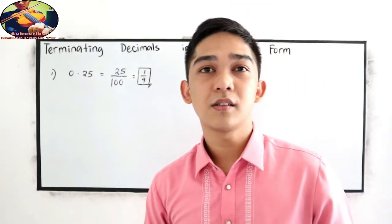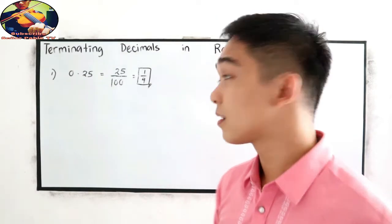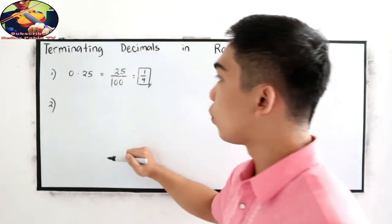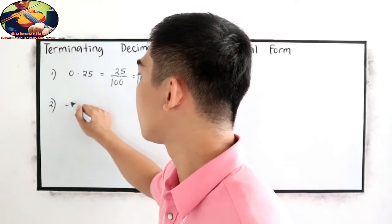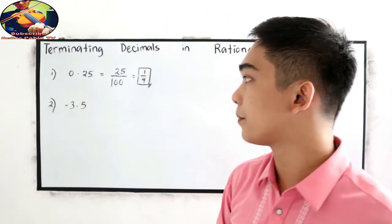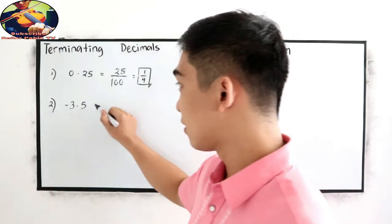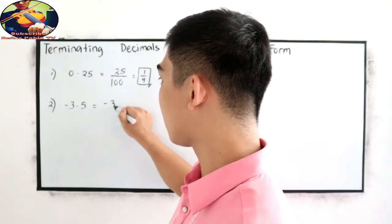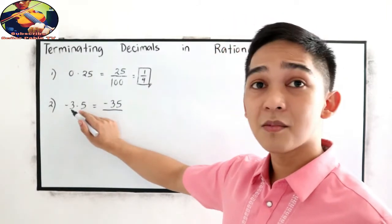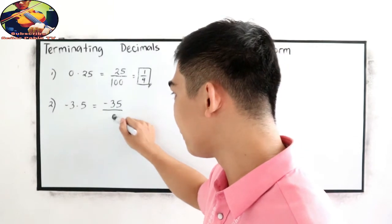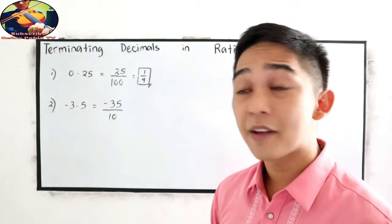Always write your answer in simplest form. Number 2: what if we have negative 3.5? Copy negative 35 over — we have 1 decimal place, so write 10 in the denominator. That's equivalent to negative 35 over 10.